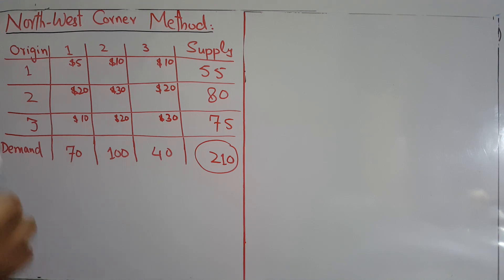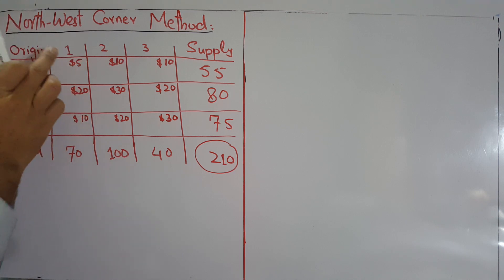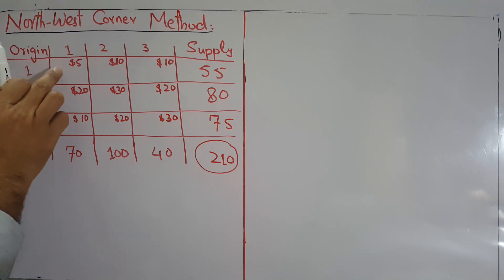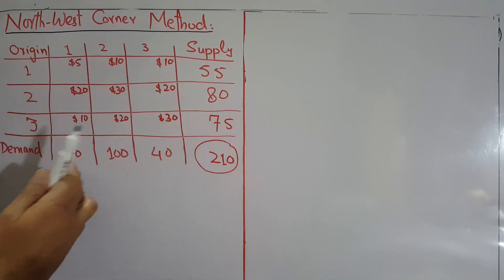Now, the North-West Corner method — as you can see from the name — refers to the North-West corner, which is the top-left corner. So you start from there. This method says that you allocate as much as possible to the top-left cell, keeping in mind the supply and the demand.